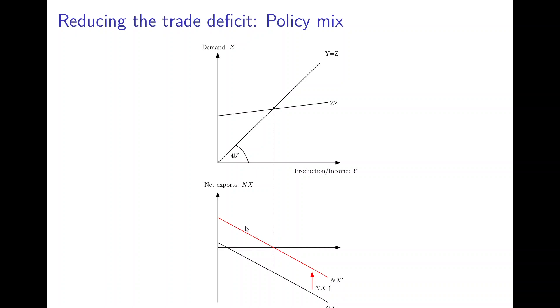So in this case, if nothing else would change and there were no other second-round effects, the trade balance would be zero, so there would not be a trade deficit anymore.